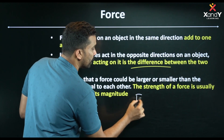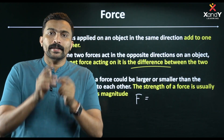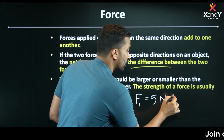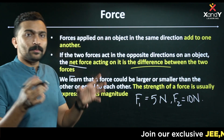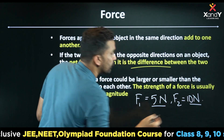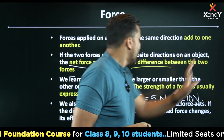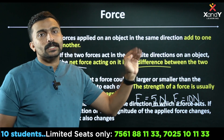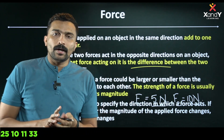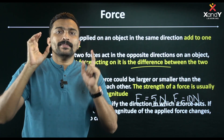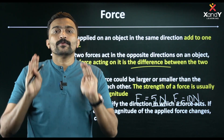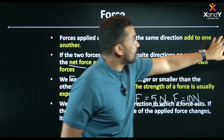A force could be larger, smaller, or equal to another. The strength of a force is expressed by its magnitude, and the SI unit of force is Newton (N). For example, if F1 is 5N and another force is 10N, we compare them — the 10N force is larger in magnitude. We also have to specify the direction in which a force is acting. If the direction or magnitude of the applied force changes, the effect also changes.